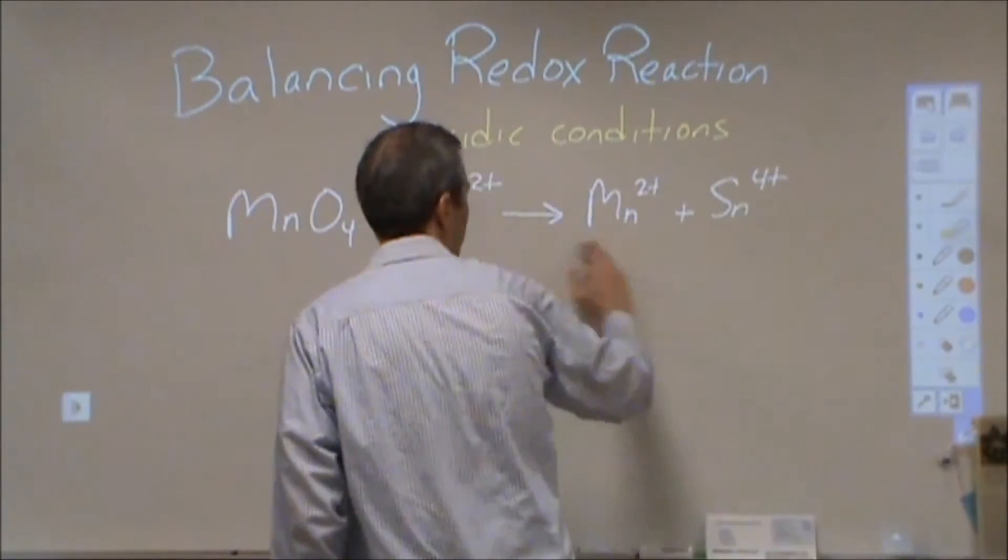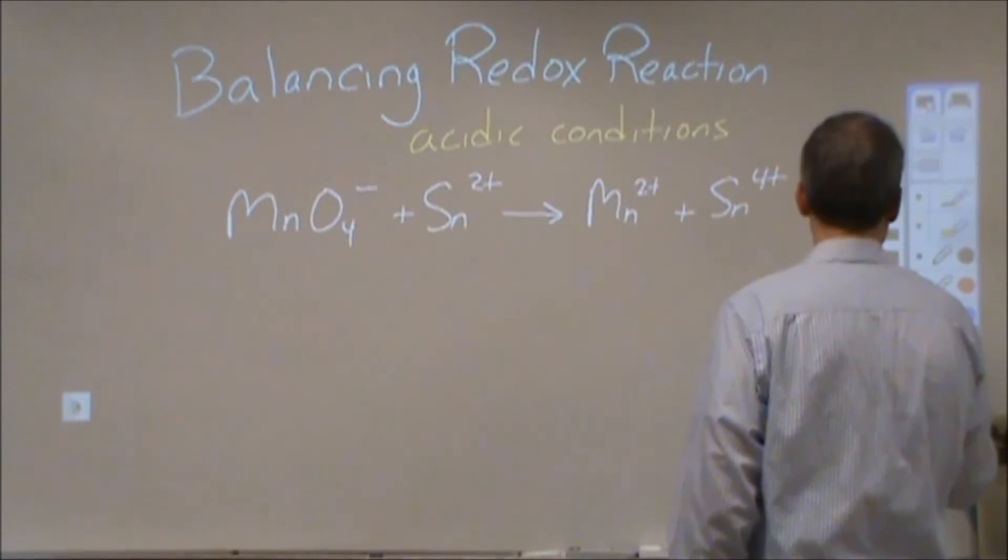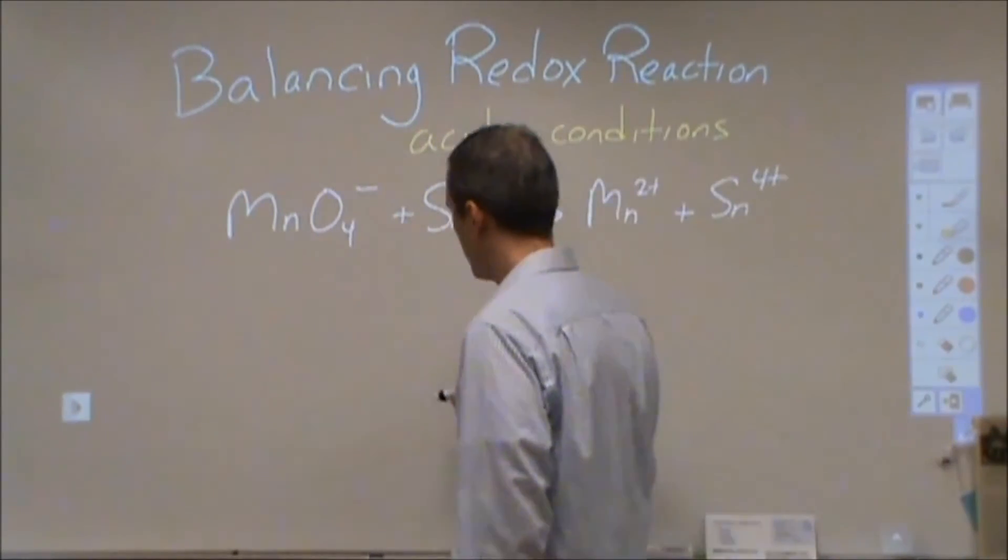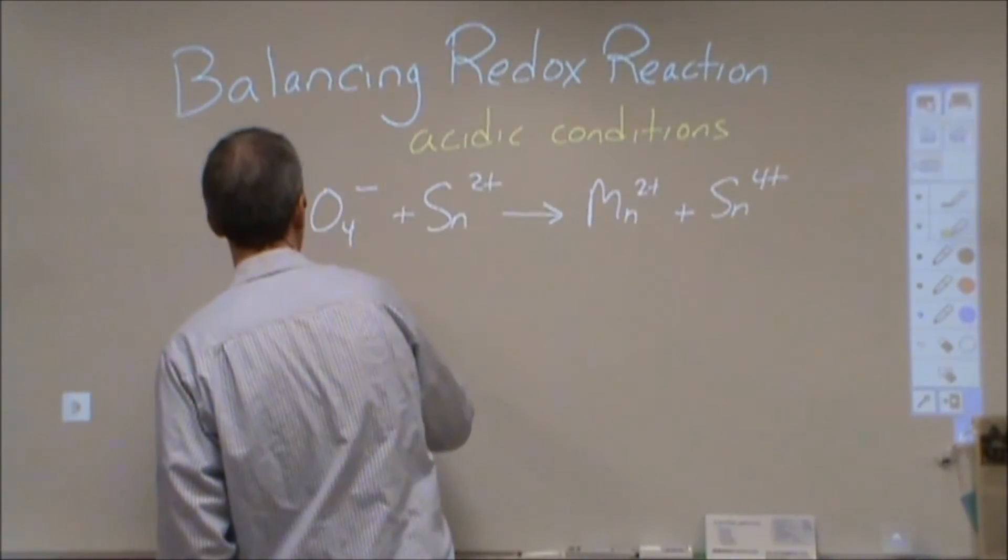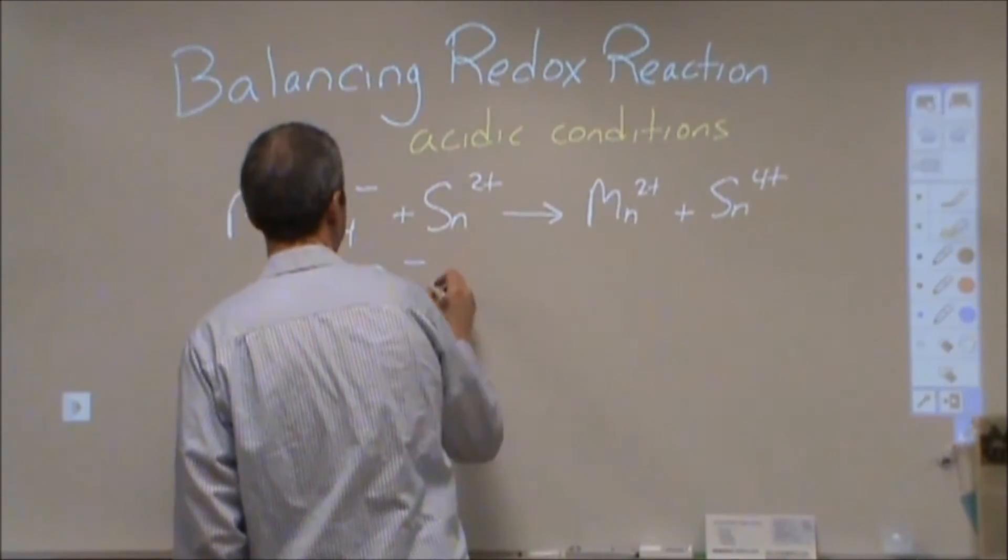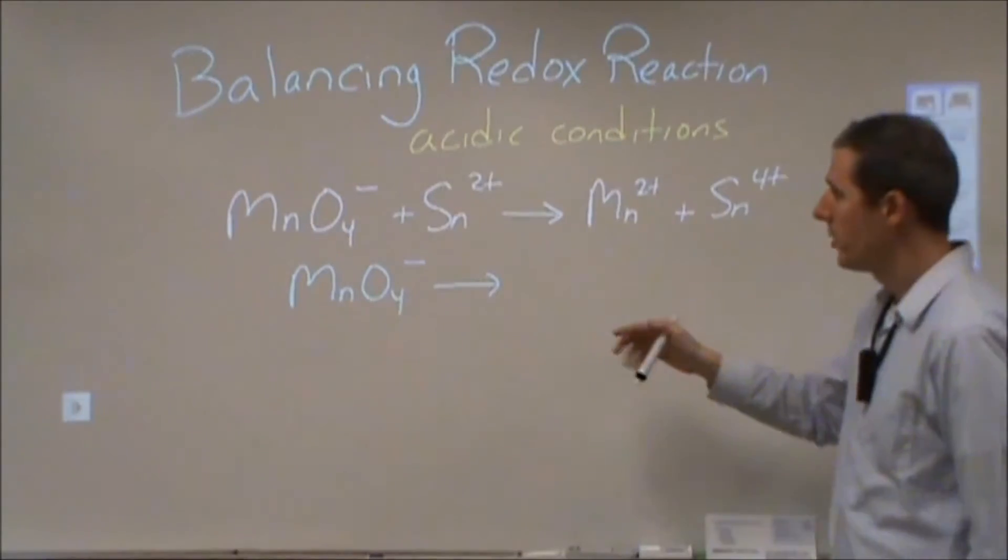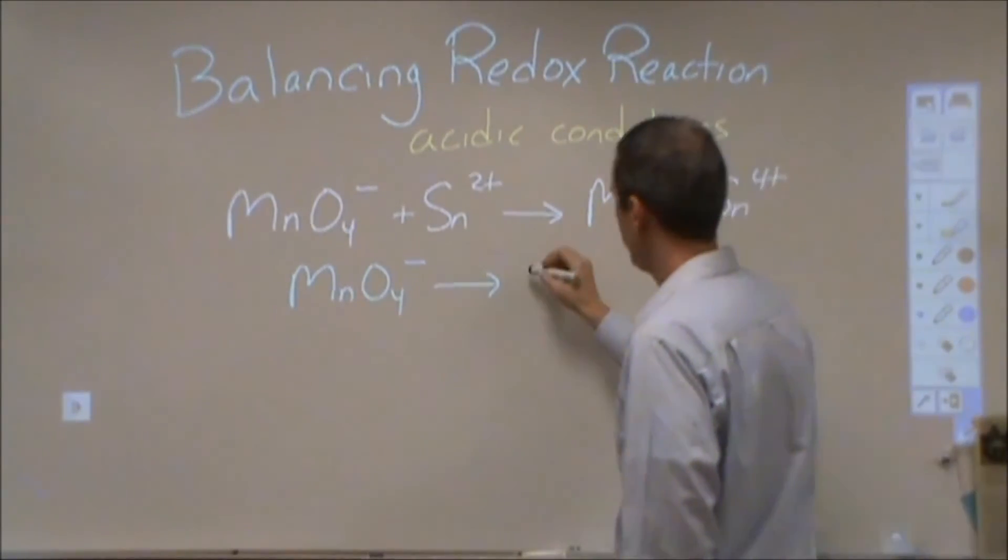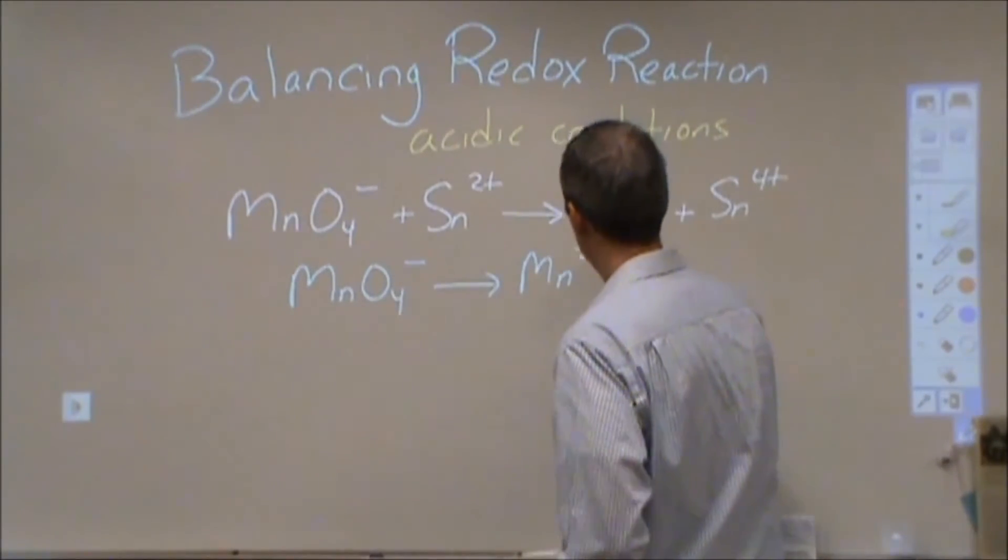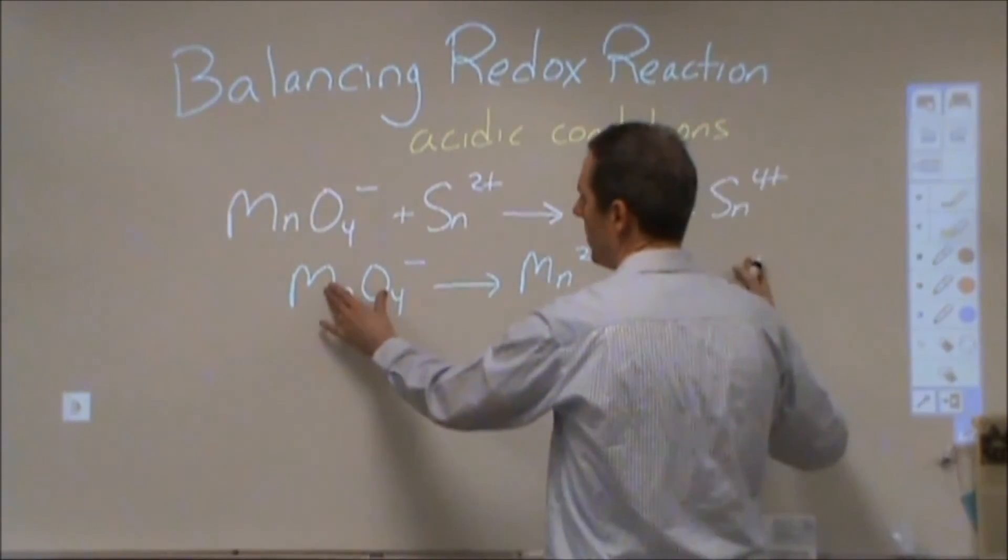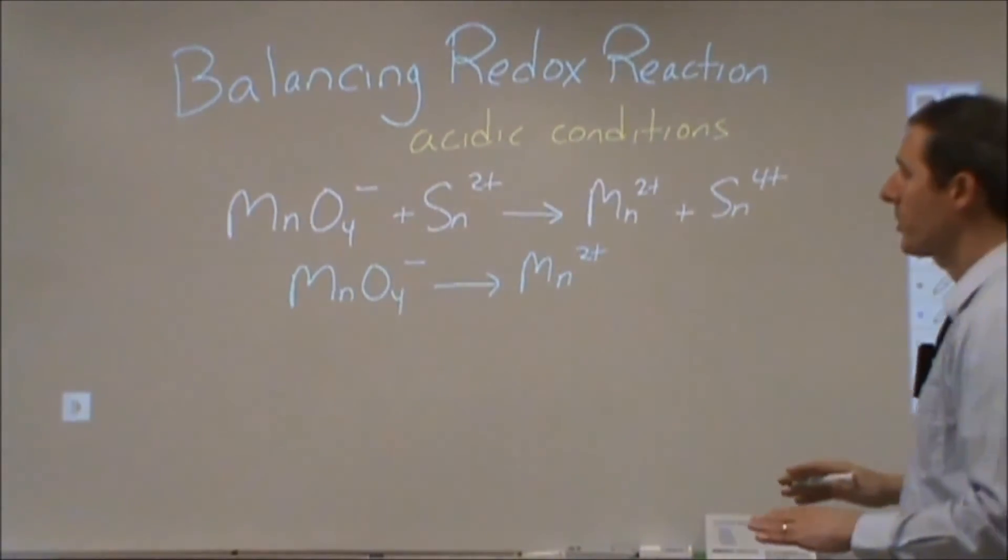So the second thing you need to do is once you have your basic reactants and products set up, you need to split everything up into half-reactions. And what that means is you need to take the chemicals that look like they go together and put them together. So permanganate goes with Mn2+. This is what this is turned into. Then you're going to balance just that reaction.